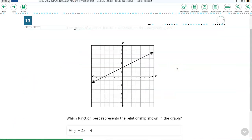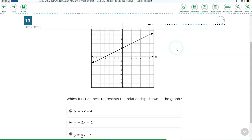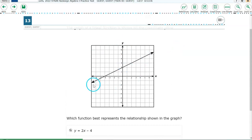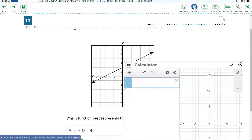The next item we're looking at is item number 13. So you do need to skip 12 to get here. Which function best represents the relationship shown in the graph? So we're simply going to graph these answer choices. We'll adjust our window to look similar to this one, but we may not need to. We'll just probably leave that.